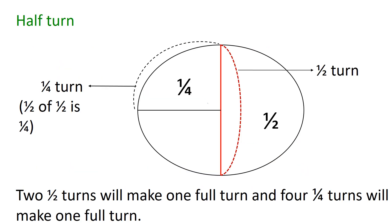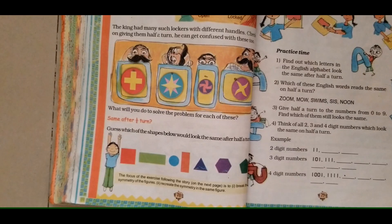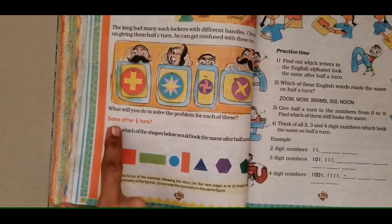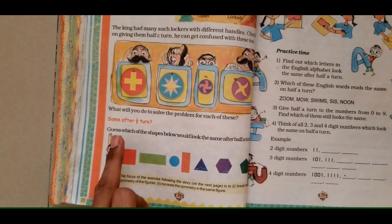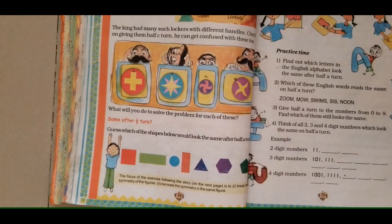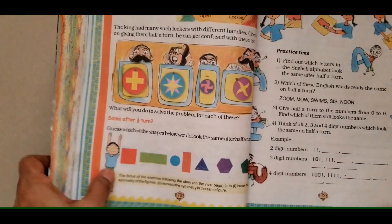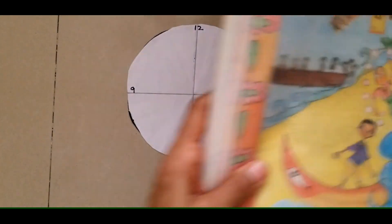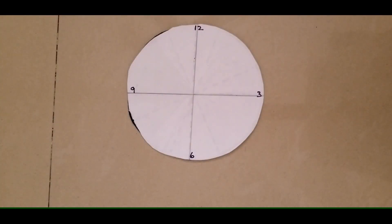Here, you can see half turn and quarter turn. Two half turns will make one full turn, and four quarter turns will make one full turn. Page 78 — same after half turn. Guess which of the shapes below would look the same after half a turn. Let us see which shapes are same after half a turn.